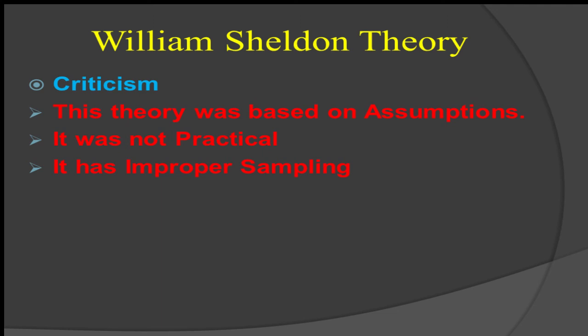Many strong and muscular people come from financially strong families. Just because someone is strong and masculine doesn't mean they will commit crime or have a greater tendency toward crime. It doesn't mean mesomorphics are criminals and ectomorphics are non-criminals — it is not like that. That was quite an obvious criticism of William Sheldon's theory.